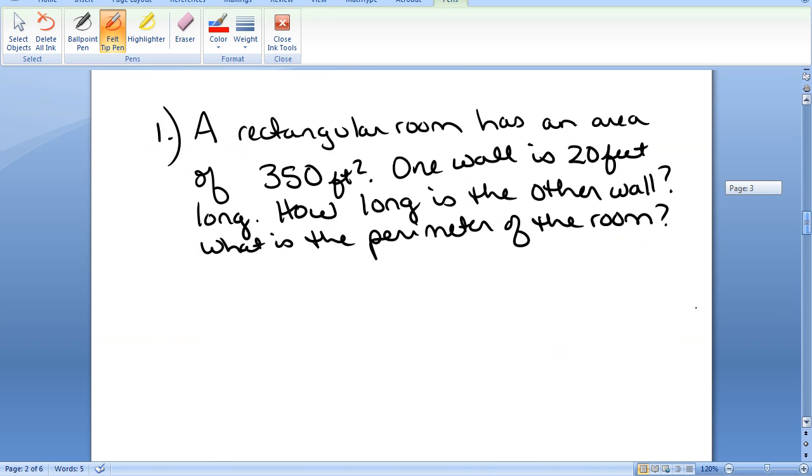Let's do a few problems involving perimeter and area. A rectangular room has an area of 350 square feet. One wall is 20 feet long. How long is the other wall, and what's the perimeter of the room? For geometry problems, it's often helpful to draw a little figure for yourself. The inside space is 350 square feet, and it tells us that one wall is 20 feet long, and we want to know this length.